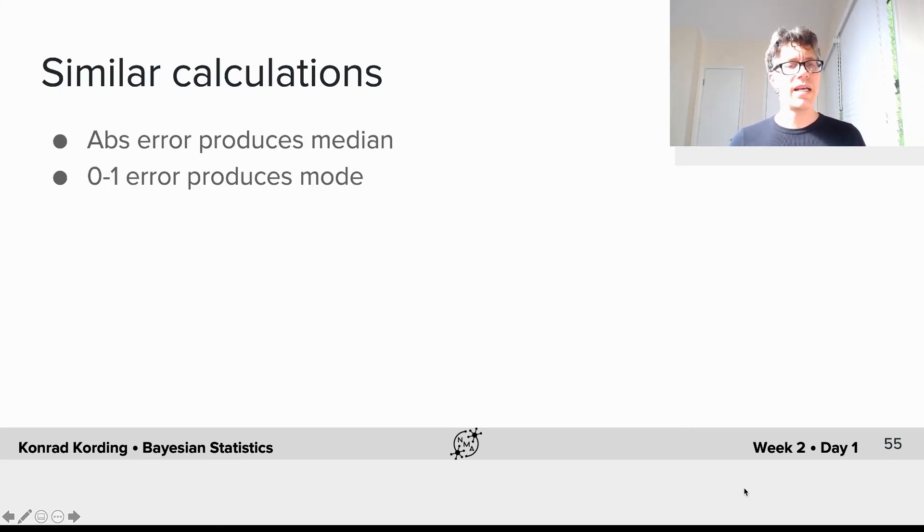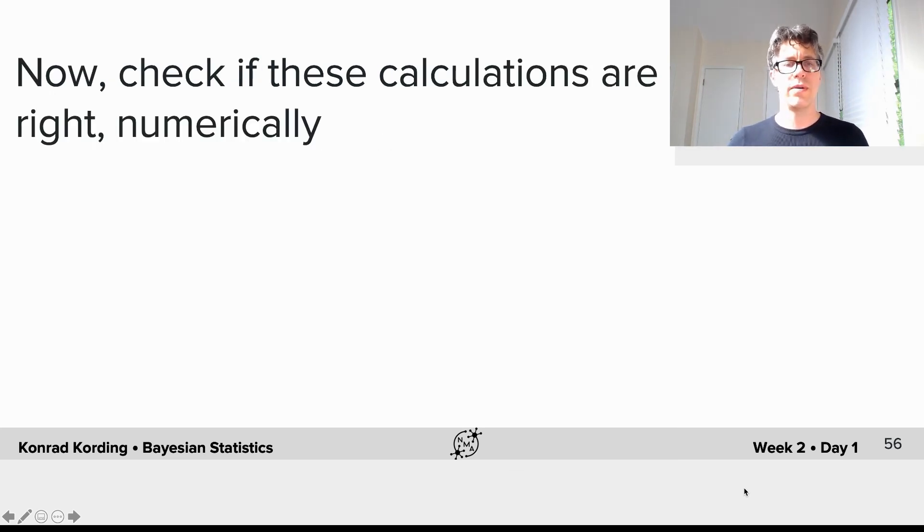You can use similar calculations: the absolute error produces the median, and the 0-1 error produces the mode. Now it's time to check if these calculations are right, numerically.